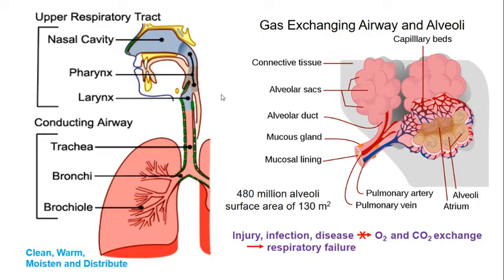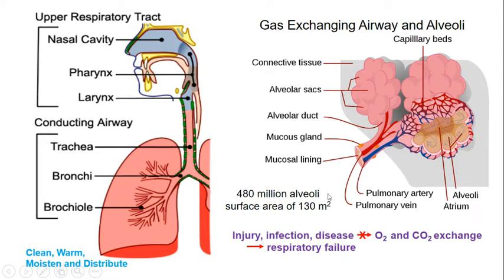In the previous session, we learned the structure of the lung and the different cell types in our respiratory system. We know the key function of our respiratory system is gas exchange. So any injury, infection, or disease to the respiratory system will affect oxygen and carbon dioxide exchange, resulting in respiratory failure.